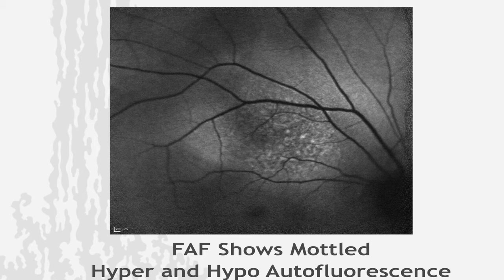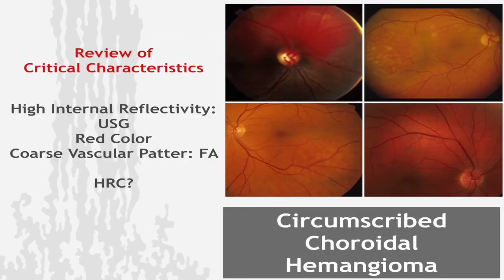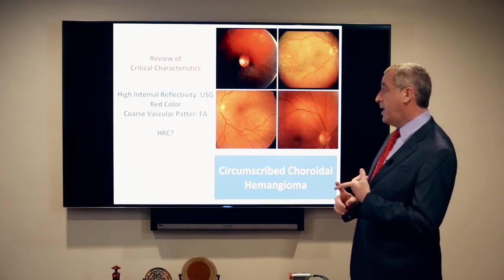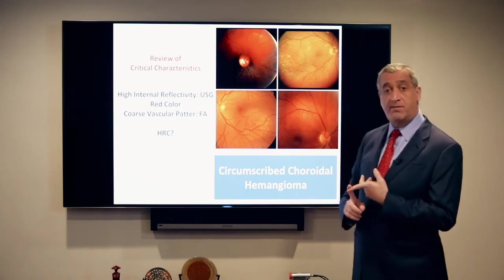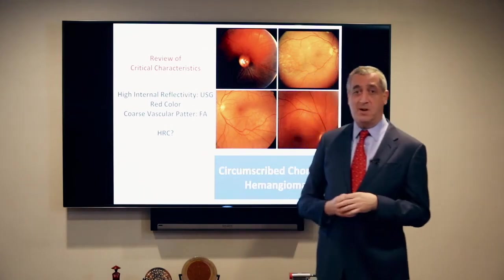You can have hyper-autofluorescence with hemangiomas, but typically only when they are leaking or doing something active. The B-scan showed high internal reflectivity, better seen with colorized images. In review of critical characteristics of choroidal hemangioma: high internal reflectivity best seen on ultrasound, reddish color best seen by photographs or ophthalmoscopy, and that coarse vascular pattern best seen by fluorescein angiography — the mnemonic would be HRC.